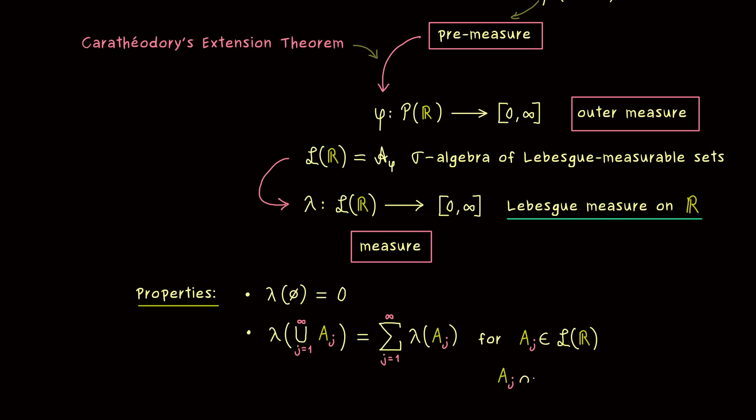However, they should also be pairwise disjoint. Which simply means, that for two different indices, we always get out the empty set, if we form the intersection. And there we have it. This whole property here is what we call sigma additivity.